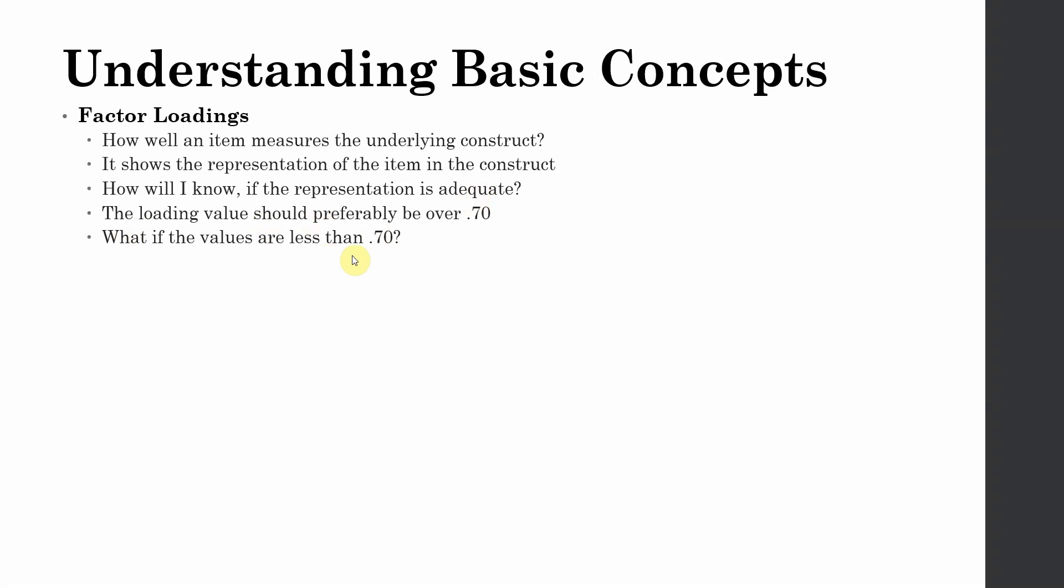But what happens if the value is less than 0.70? Not all values may be over 0.70. Some of them may be less than 0.70, some of them may be over 0.70, some of them may be over 0.80. But what happens if the values are less than 0.70?